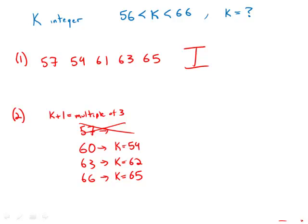And then obviously above that, we're going to be above 66, so that will not work. But these 3 are values that are between 56 and 66 that satisfy this constraint. We can't tell which one of these are, so this statement by itself is also insufficient.